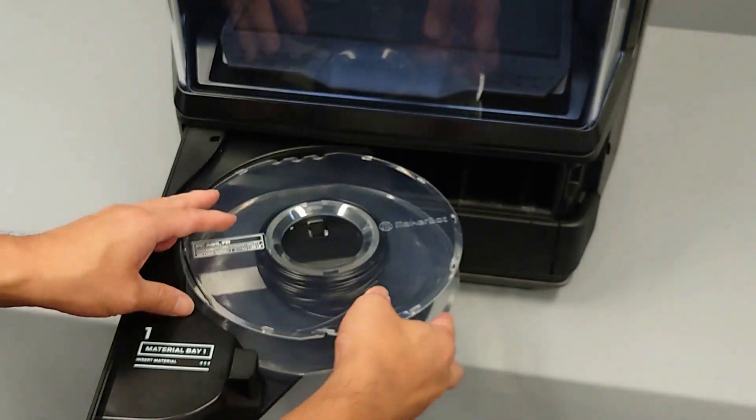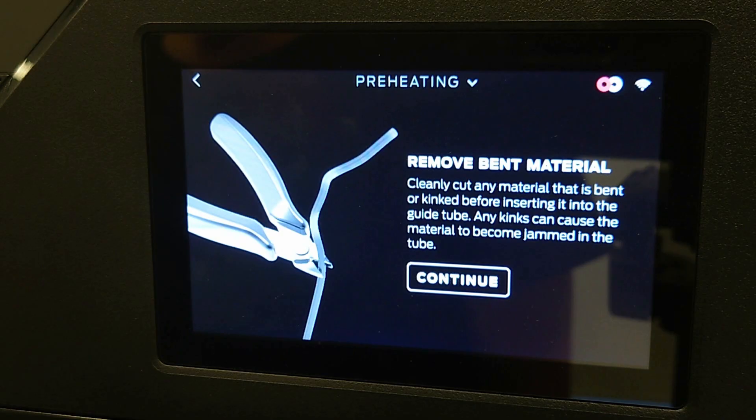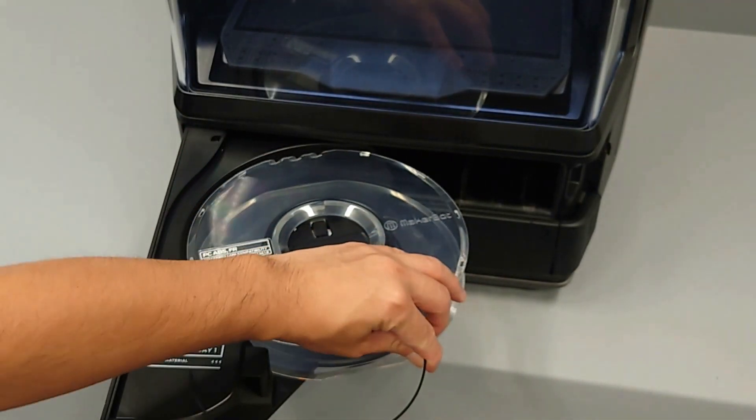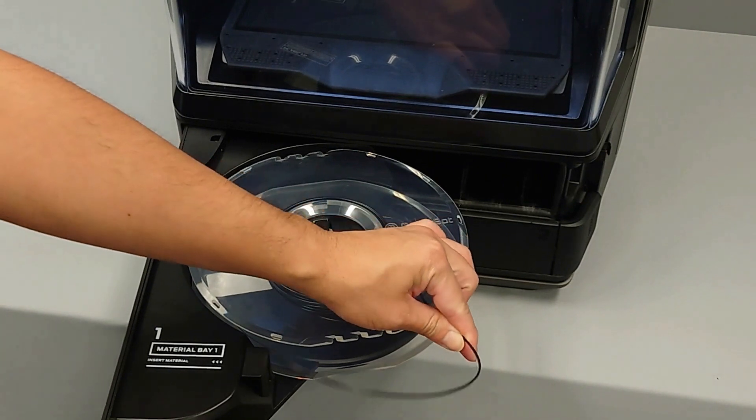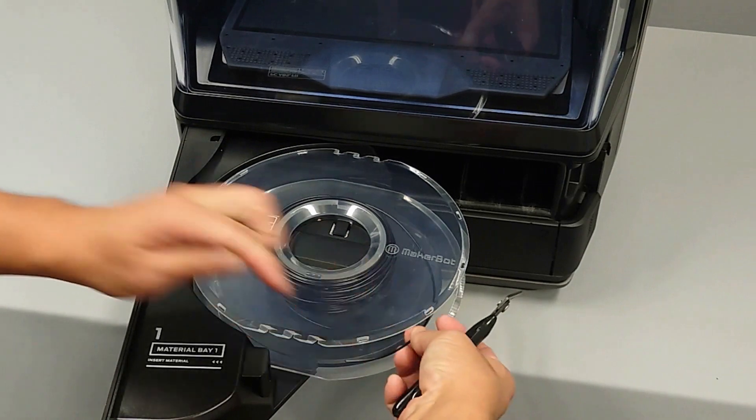You'll see a message instructing you to remove bent material from the spool. To do this, release the end of the material from the catch hole on the spool and clip off 5 to 10 inches of the material with the snips included in your method accessory kit.